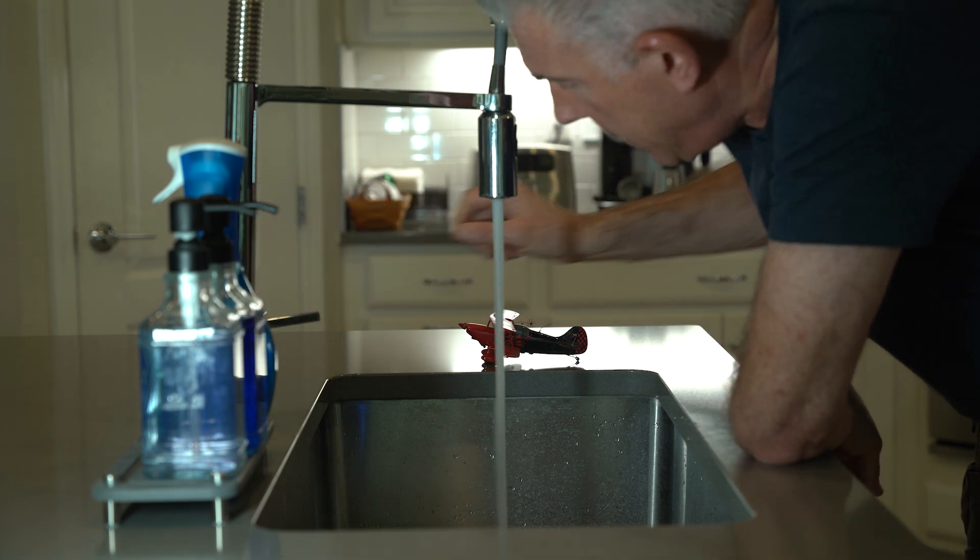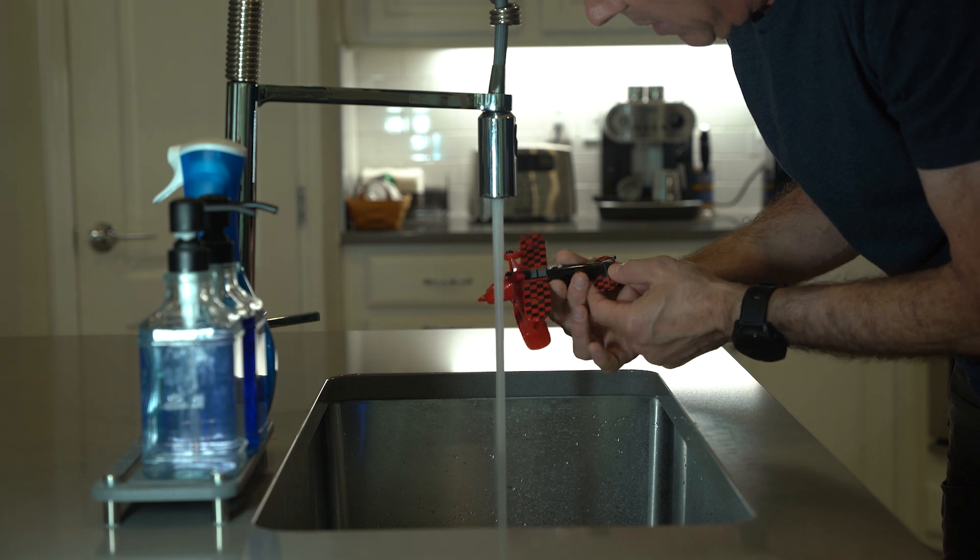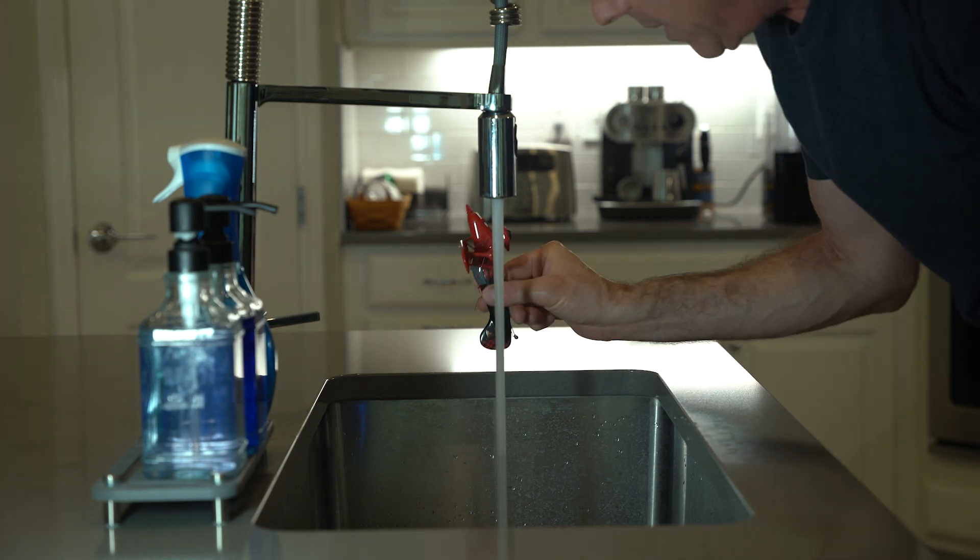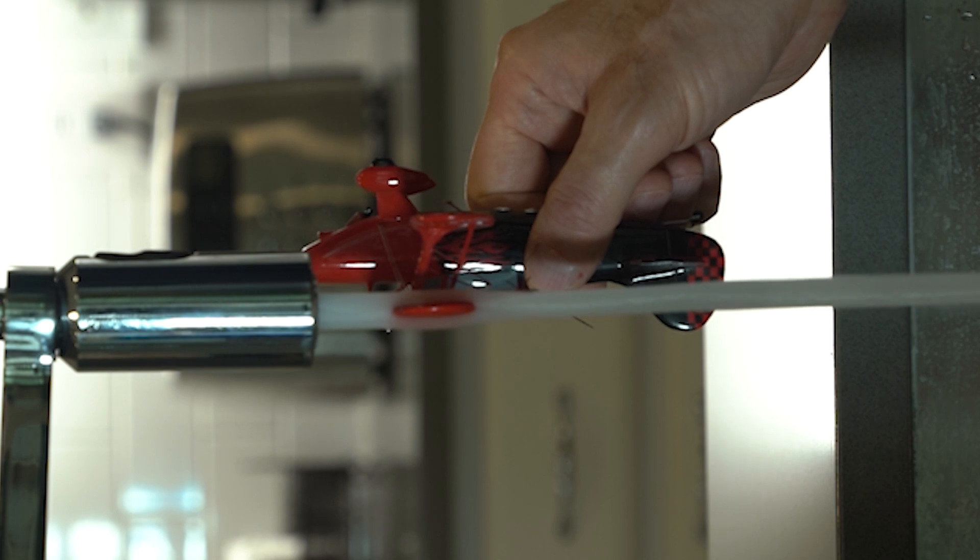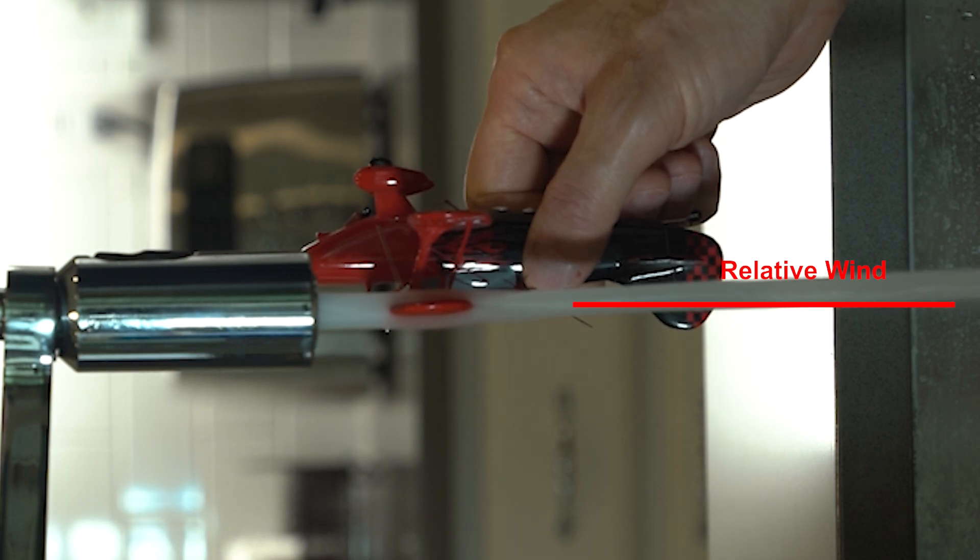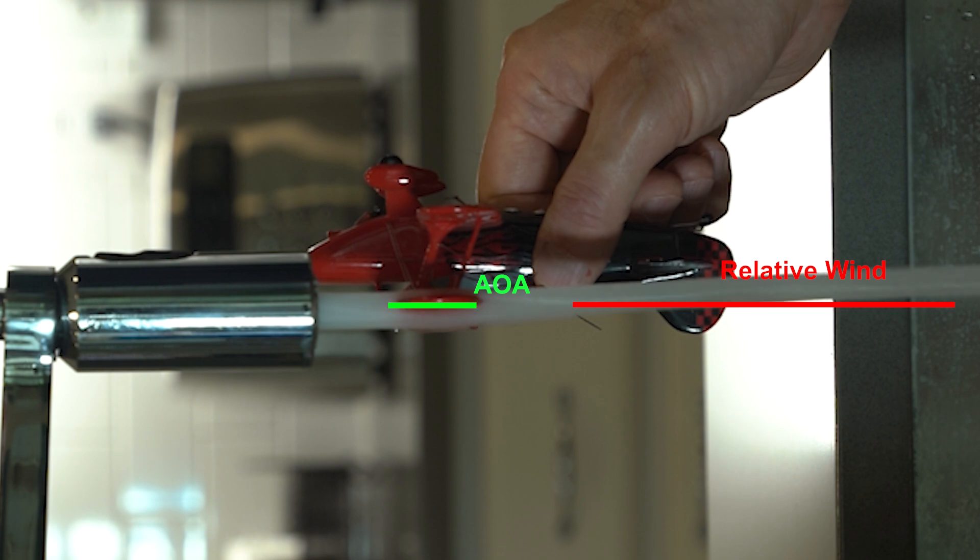So let's get the airflow going and we'll take the model pit and this time we'll turn it upside down and we'll put it in the flow. Now right now it's at about a neutral angle of attack. Notice the flow is just going over the wing on both sides, it's laminar flow.